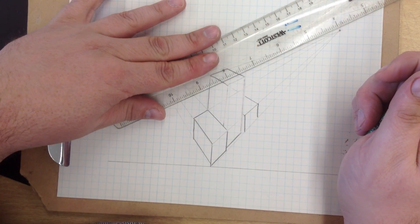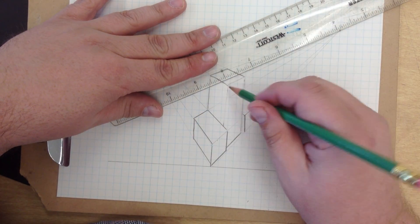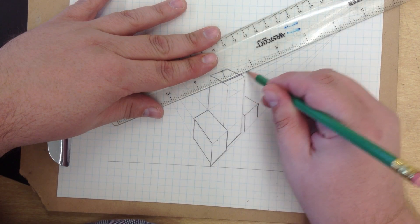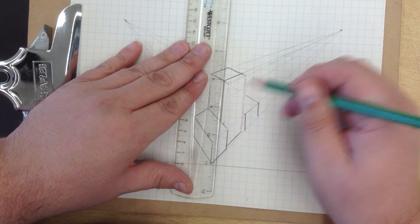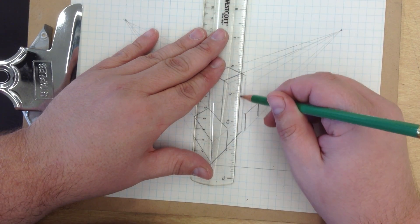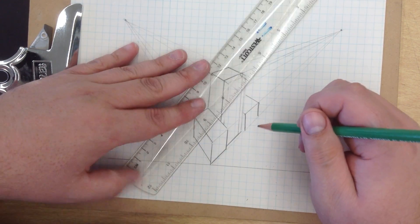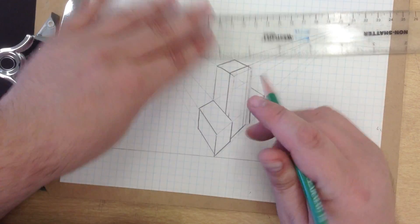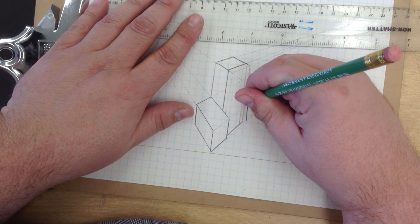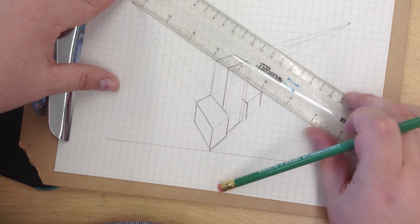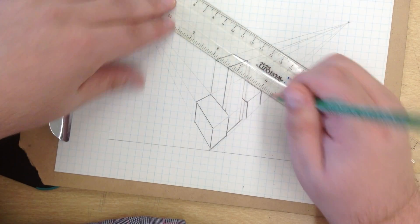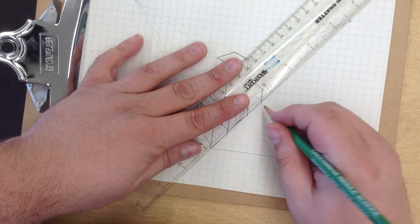You can make it a little bit skinnier up there. See how it connects there. Drop your vertical, drop your vertical, and go a little bit deeper. That looks a little bit more to perspective.